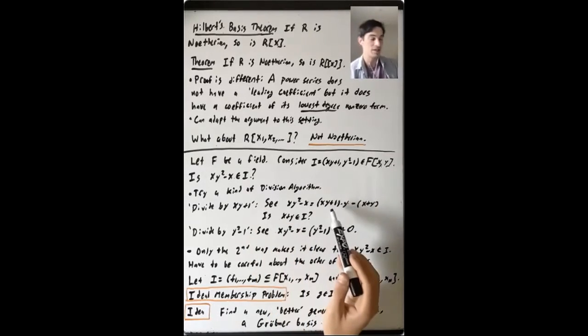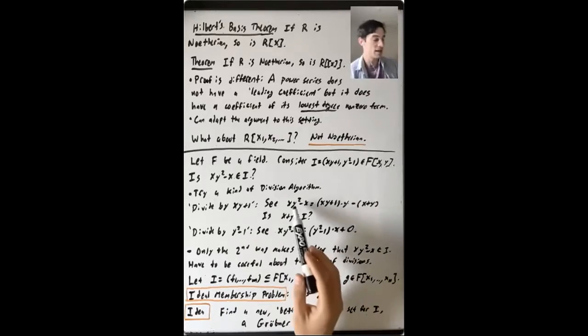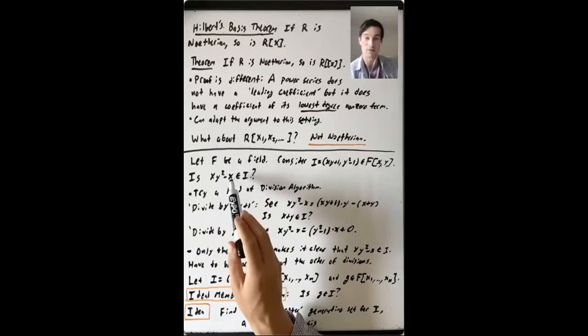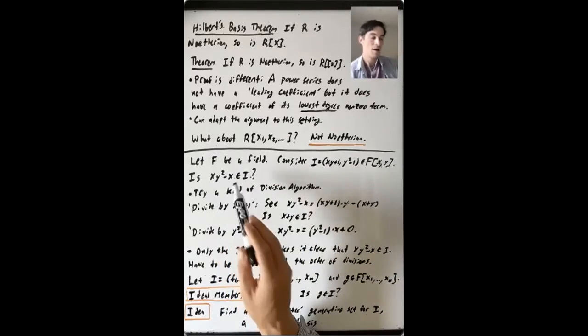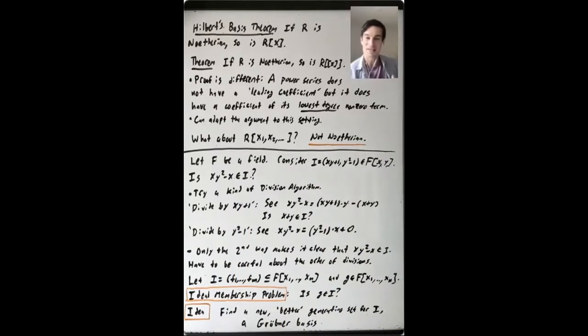And there's some kind of subtle stuff going on here. I said what you want to do with these divisions is you want to multiply by the appropriate thing to cancel out the main term of your polynomial.